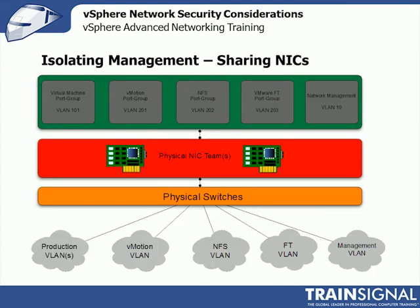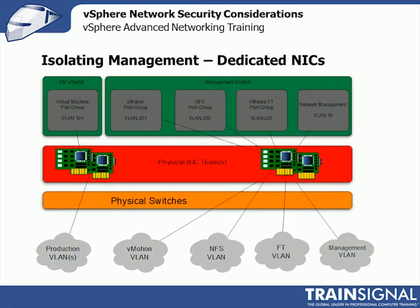Here's a diagram showing isolating management but sharing NICs - basically things on different VLANs. Yes, it's isolated to its own VLAN, but it's still going over shared NICs and shared infrastructure, so it's not really secure, just separated. The alternate is using dedicated NICs for sensitive traffic like vMotion, NFS, iSCSI, fault tolerance, or management - attached to the right vSwitches or port groups. Your VM traffic runs on one side and sensitive traffic runs over dedicated NICs, which is a good idea if you're concerned that someone may be able to sniff that traffic and pull out information.